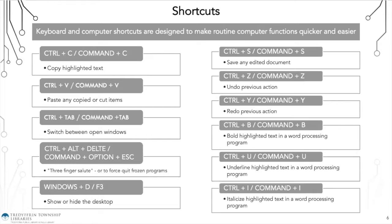Control or Command+C copies highlighted text. Usually you highlight text, right-click, and click copy from the drop-down menu, but with Control+C you just highlight and press the shortcut at the same time and it copies automatically — saving you the right-click step. Control+V pastes any copied or cut items.